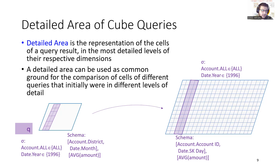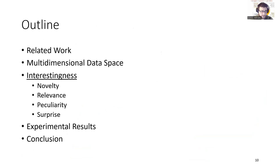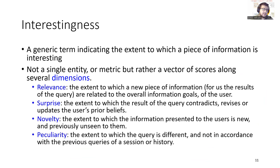For example, for query Q, the cells are first represented in the space of levels district and month, while their detailed area is a much larger multidimensional space with levels account ID and SK day for the respective dimensions. Interestingness is a generic term indicating the extent to which a piece of information is interesting. We believe we cannot express interestingness as a single entity or metric, but rather as a vector of scores along several dimensions: relevance, surprise, novelty, and peculiarity.